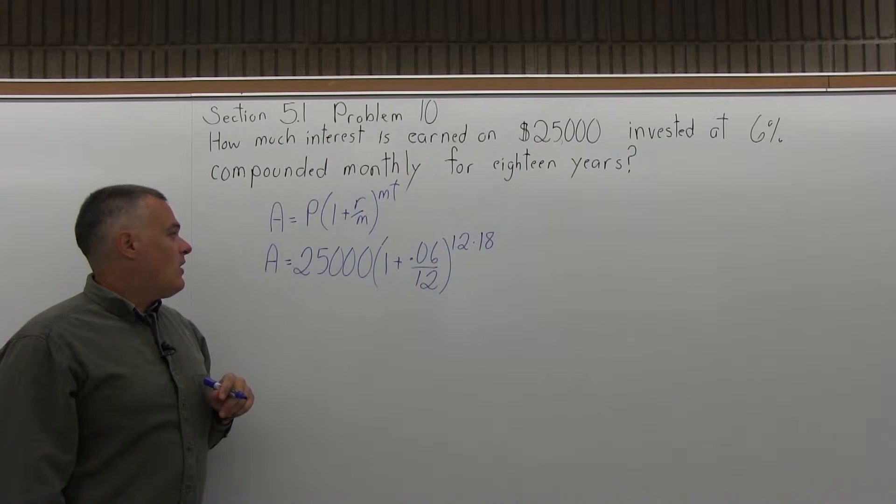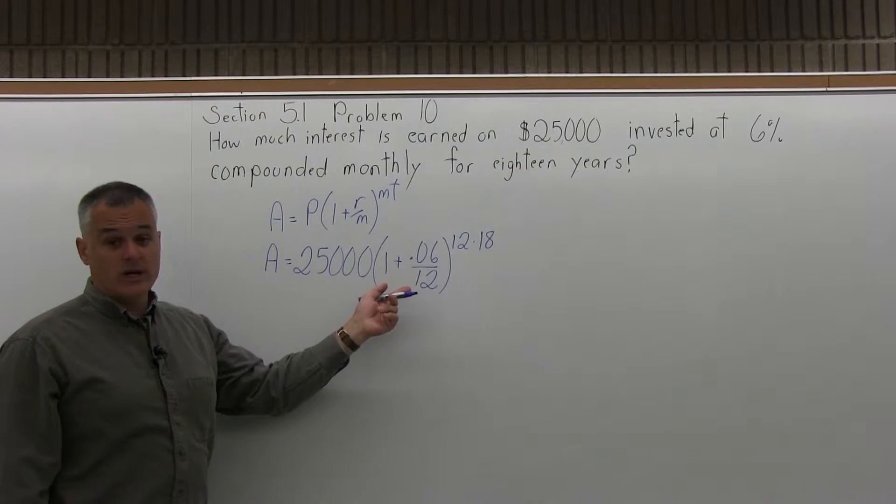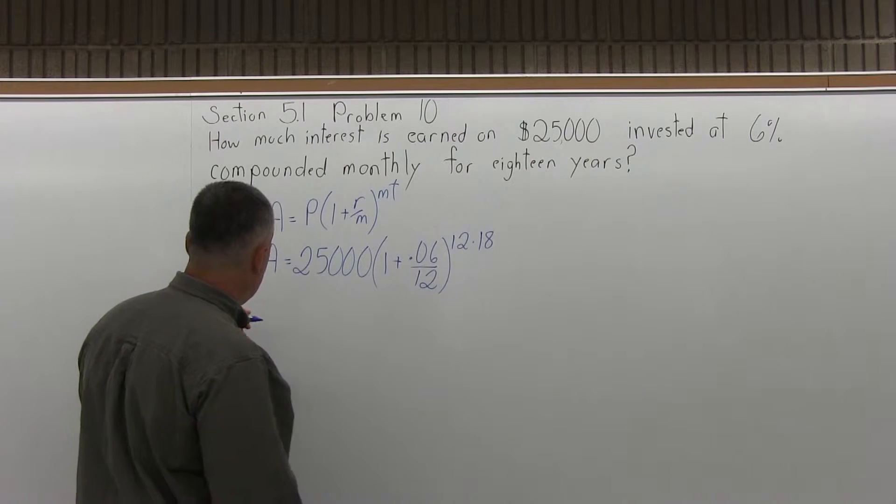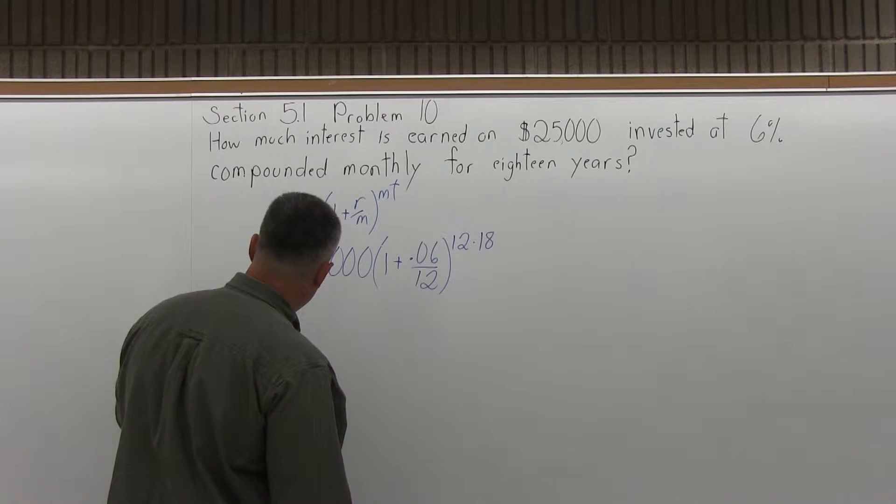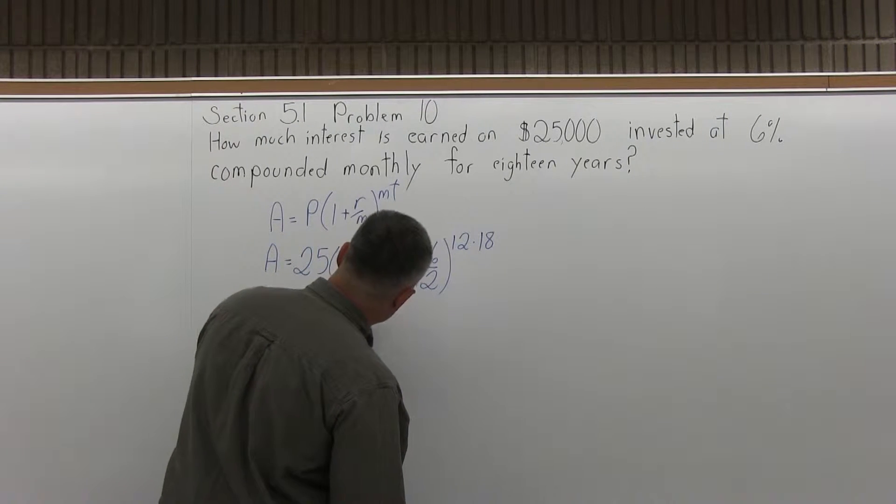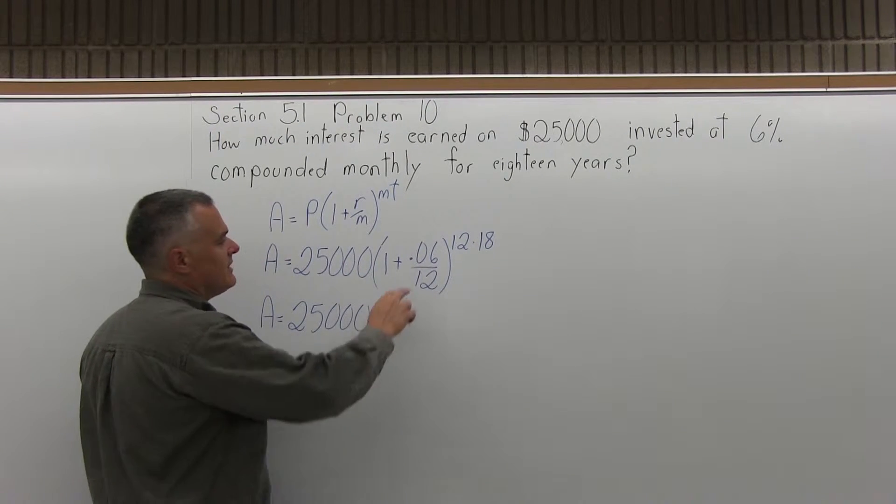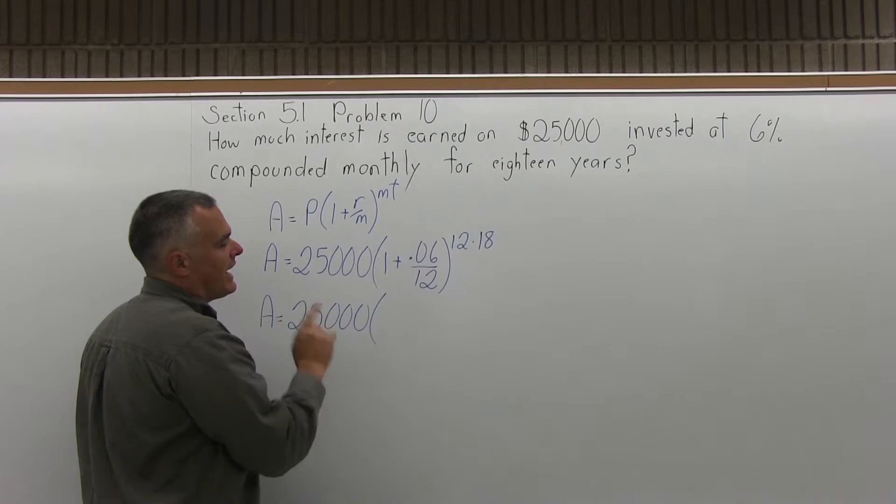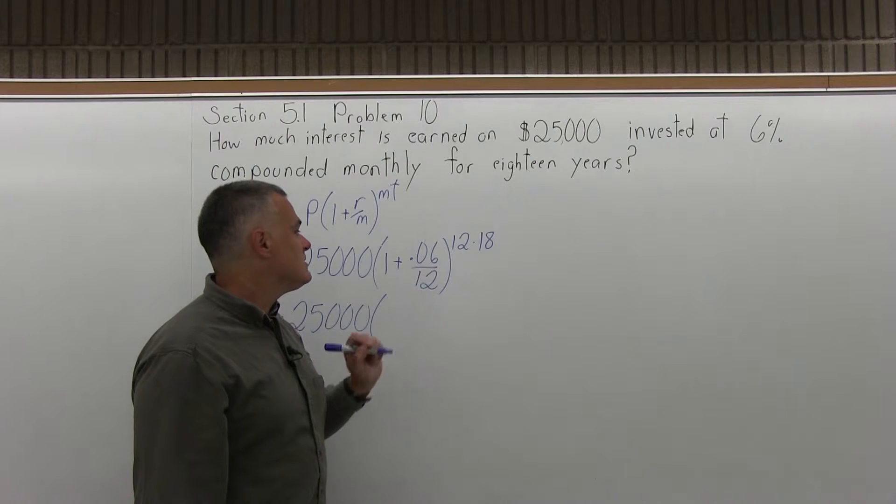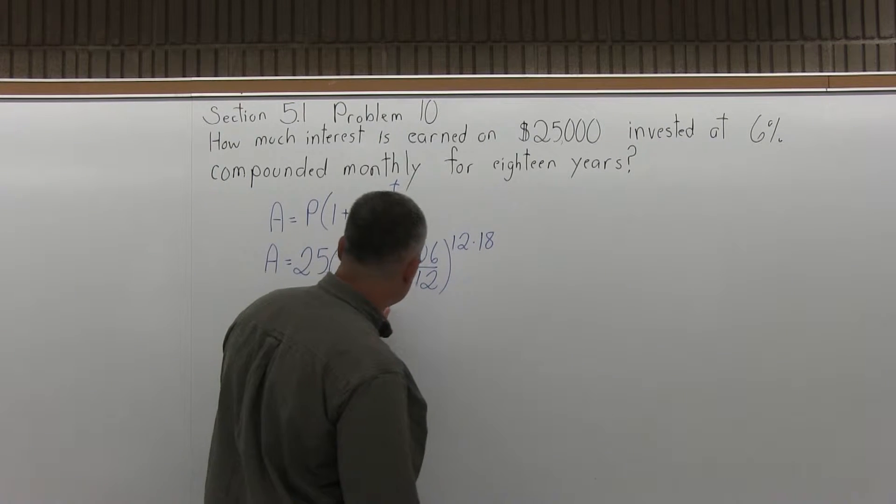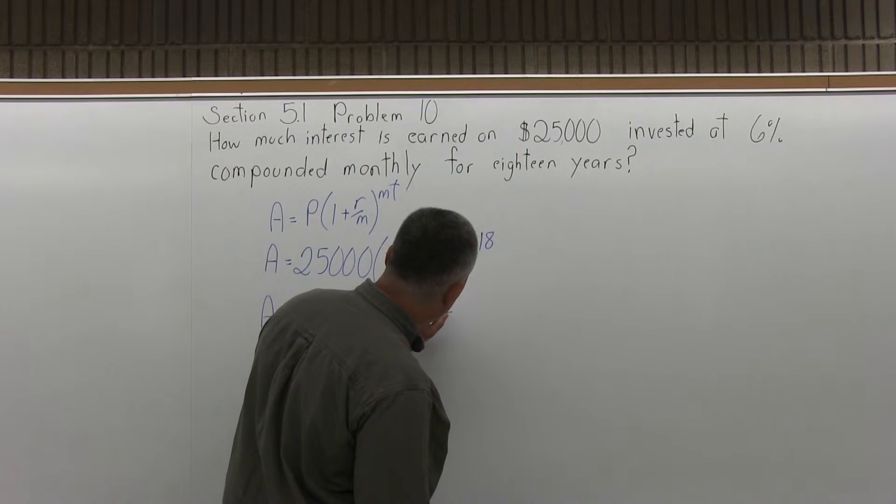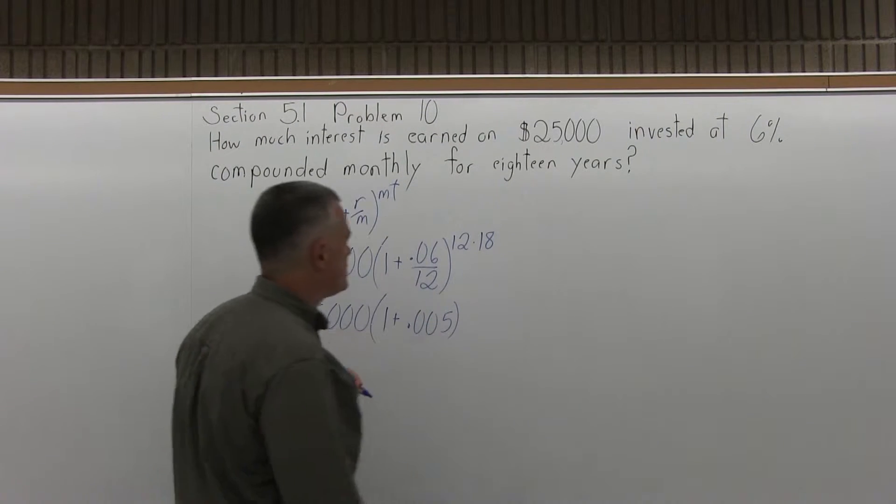Now I have to do the work in parentheses first. Any type of math when you have parentheses, that needs to be dealt with first. So I'm going to have A equals 25,000 times the parentheses. In the parentheses, there's a division and an addition. I have to do the division first. So 0.06 over 12 is 0.005, so I have 1 plus 0.005 in parentheses.